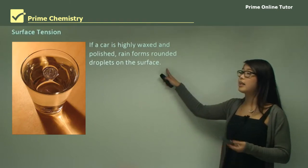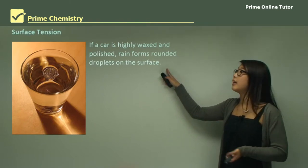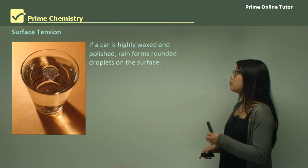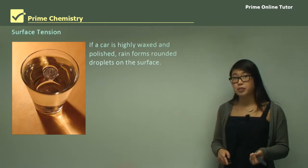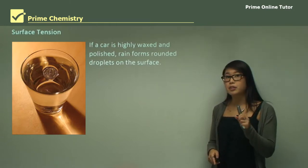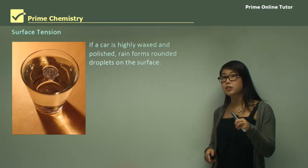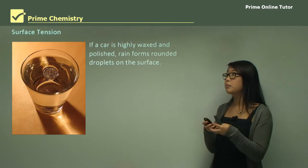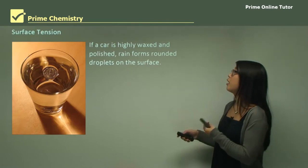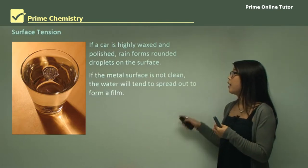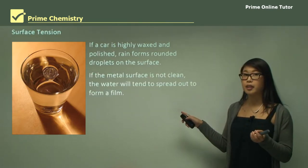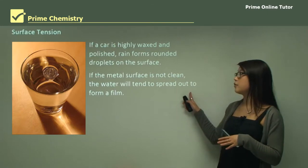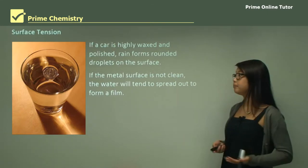For example, if you have a car that's highly waxed and polished, when rain drops on it they form rounded droplets on the surface because the cohesive forces are quite strong and pull the water together to form a sphere. But if the metal surface is dirty, it breaks this up and the water tends to form a thin film on the car instead.